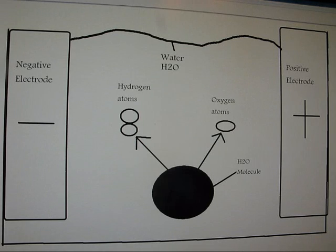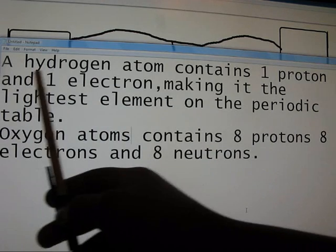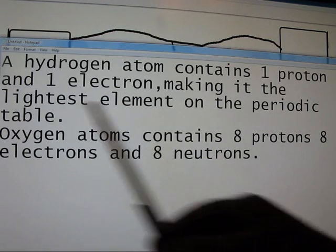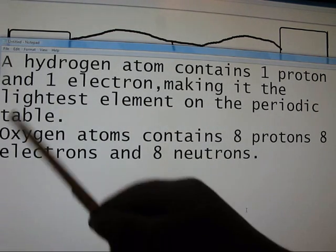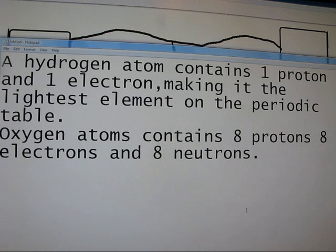Now, what happens is, just a little information here, a hydrogen atom contains one proton and one electron, making it the lightest element on the periodic table. Oxygen atoms contain eight protons, eight electrons, and eight neutrons, making them quite heavy.